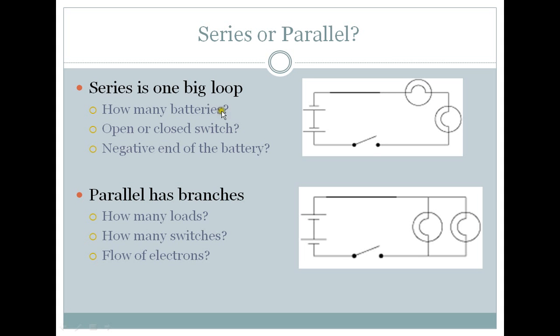So how many batteries does it have? It has two batteries, two cells. Is this switch open or closed? It's open, which means our light bulbs will not be on. These are also light bulb symbols. The negative end of the battery terminal will be at this end, so the electrons will be flowing in this direction.